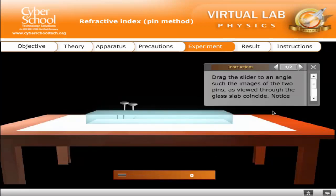Drag the slider to an angle such that the images of the two pins as viewed through the glass slab coincide. Notice that this angle is the same as the angle of incidence I.